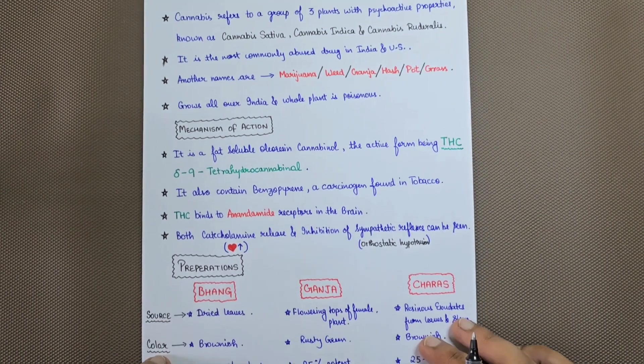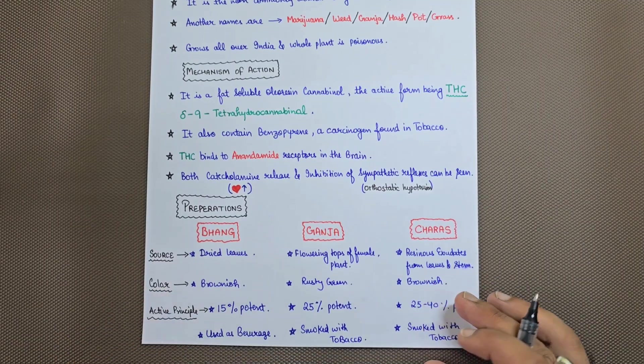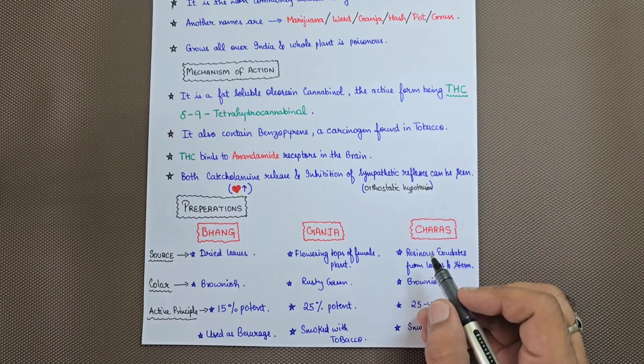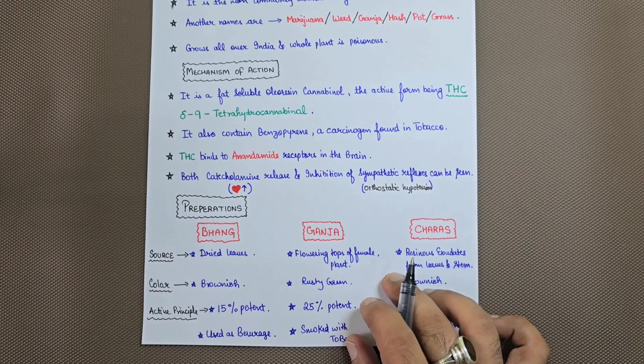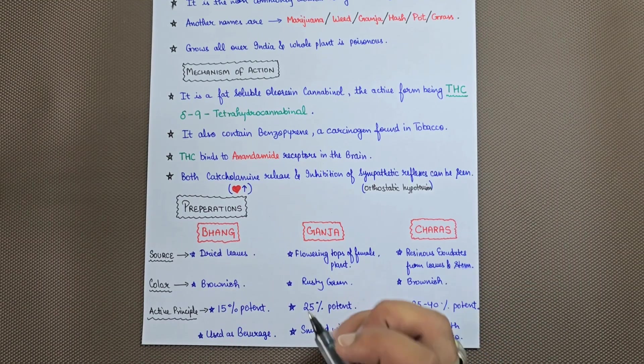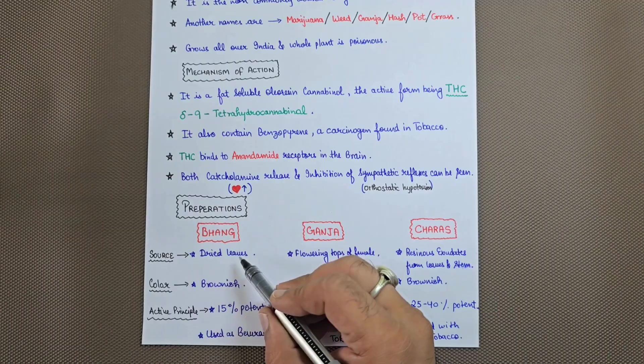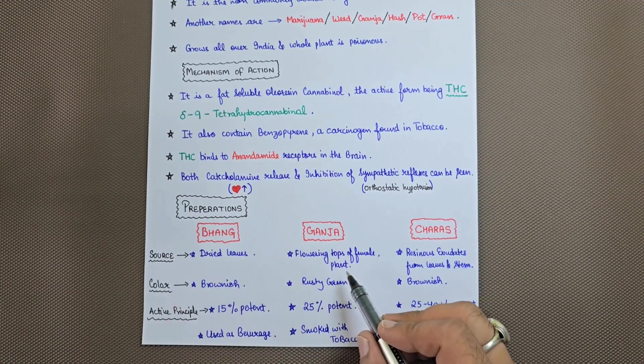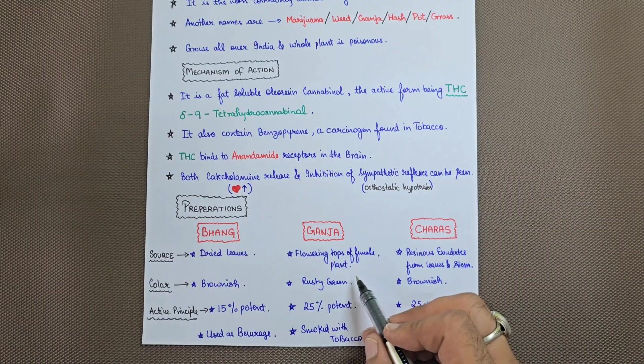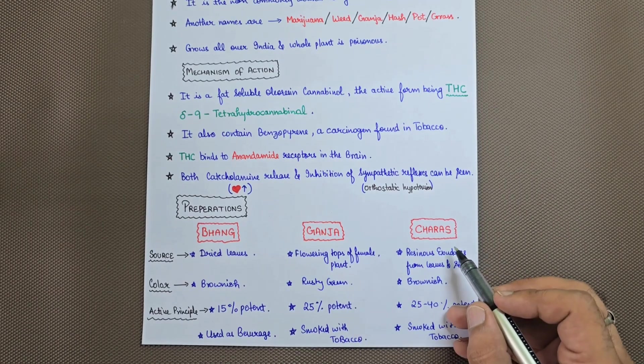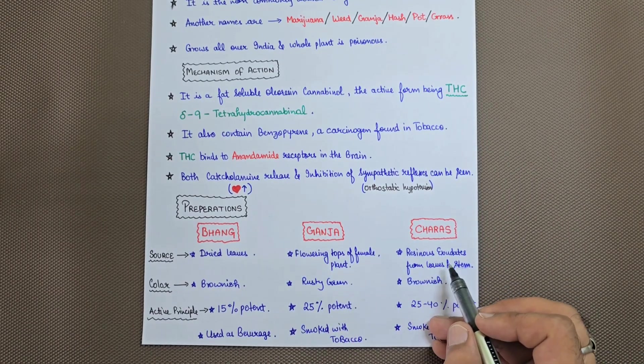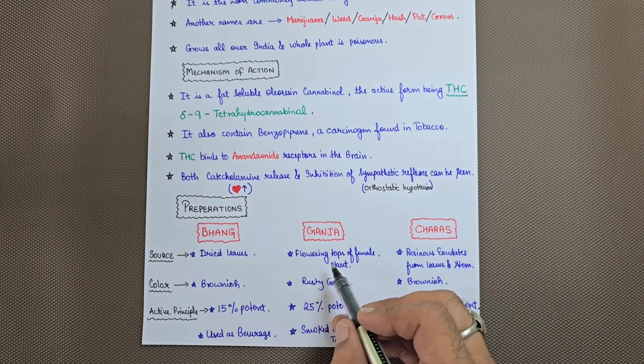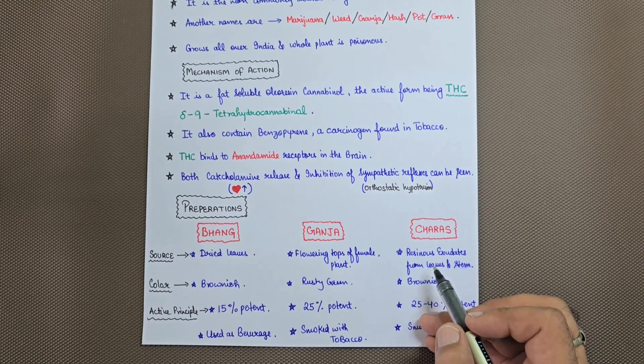What are its different preparations? Different preparations include bhang, ganja, and charas - forms present in India. For bhang, the source is dried leaves. For ganja, the source is the flowering top of a female plant. For charas, the source is resinous exudate from leaves and stem.